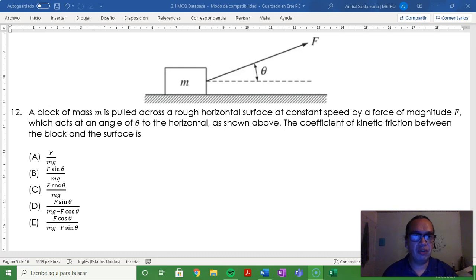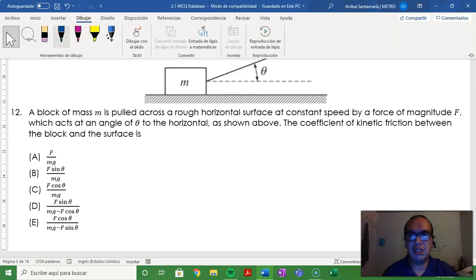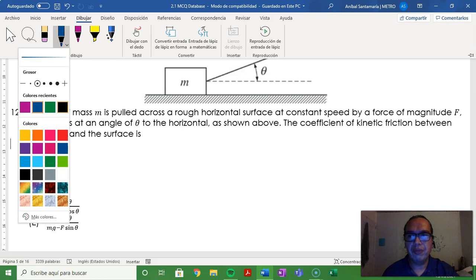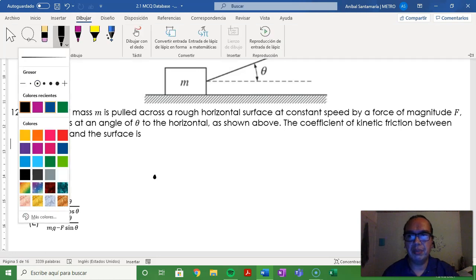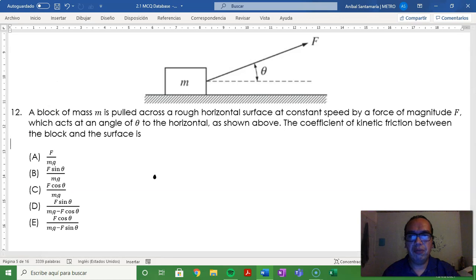The coefficient of kinetic friction between the block and the surface is... If we want to know the coefficient of kinetic friction, we first need to determine what are the forces acting on this subject and what's the relationship between them. There are four forces in this situation.